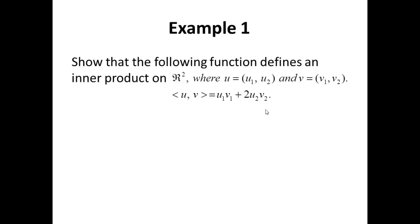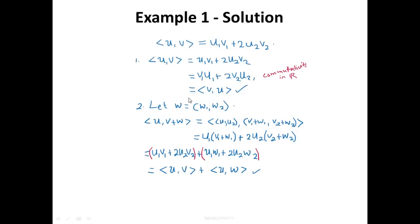We're going to verify all four axioms to see if this definition of ⟨U, V⟩ qualifies as an inner product. For Axiom 1: U₁V₁ and U₂V₂ are all real numbers, and therefore by commutativity in R, U₁V₁ = V₁U₁ and U₂V₂ = V₂U₂, which gives us ⟨V, U⟩. So Axiom 1 holds.